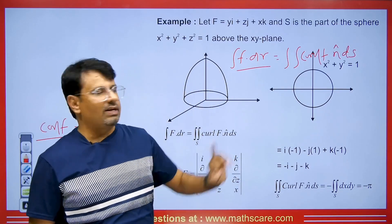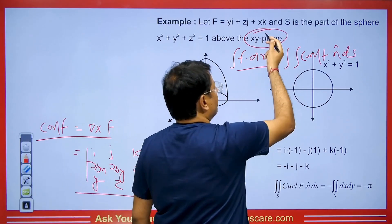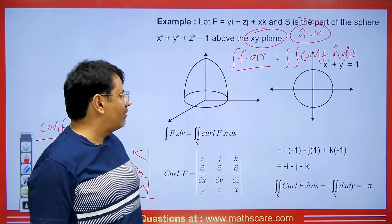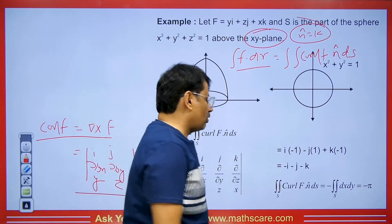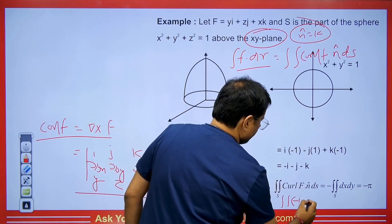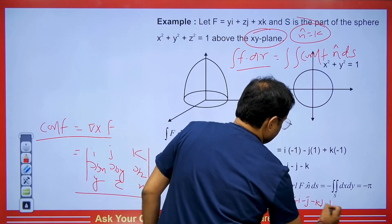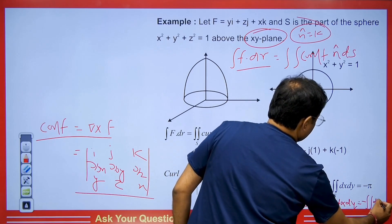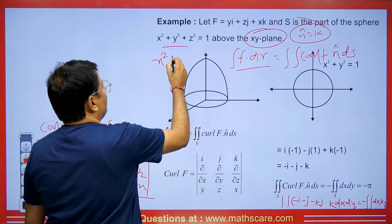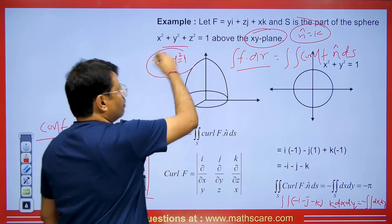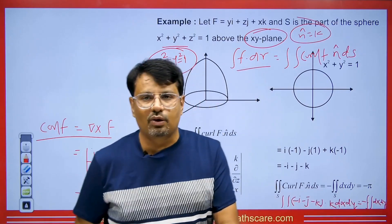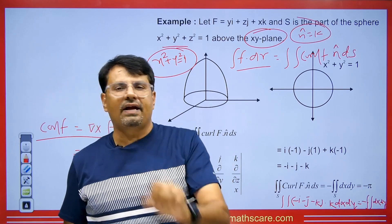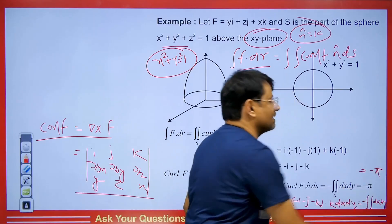Now we discuss the unit normal vector n cap. Since we have the xy plane, n cap = k. Putting this into the double integral, we get the double integration of (-i - j - k) dot k dx dy. The k dot k gives 1, leaving us with -dx dy. Since we have the xy plane, the region is the circle x² + y² = 1. The double integral of dx dy is just the area, which equals π r² = π(1)² = π. So the answer is -π.